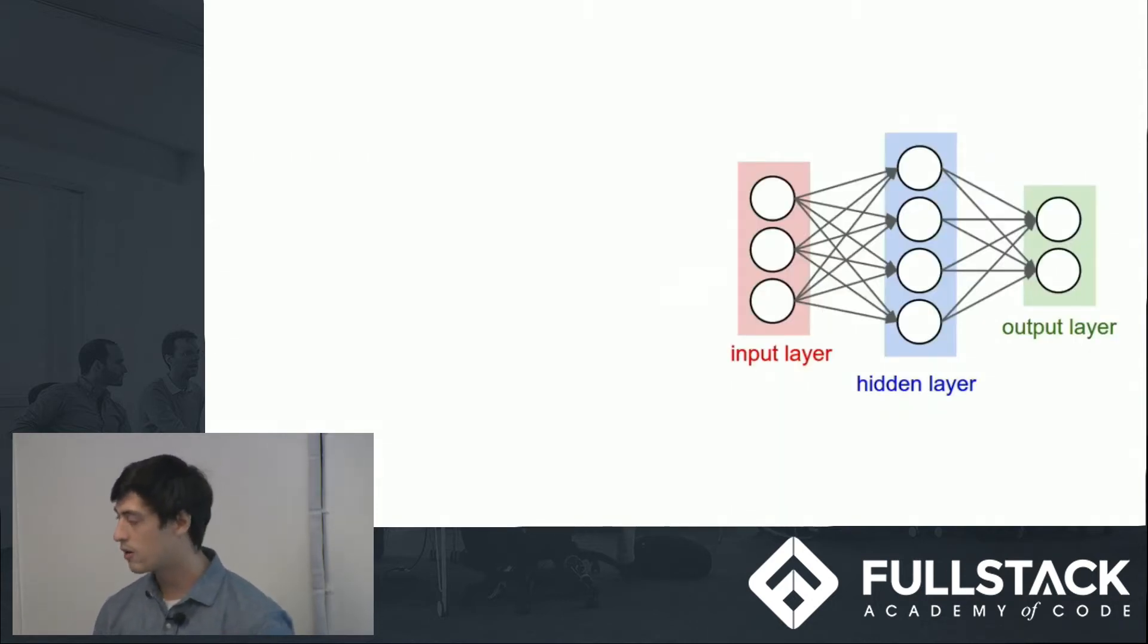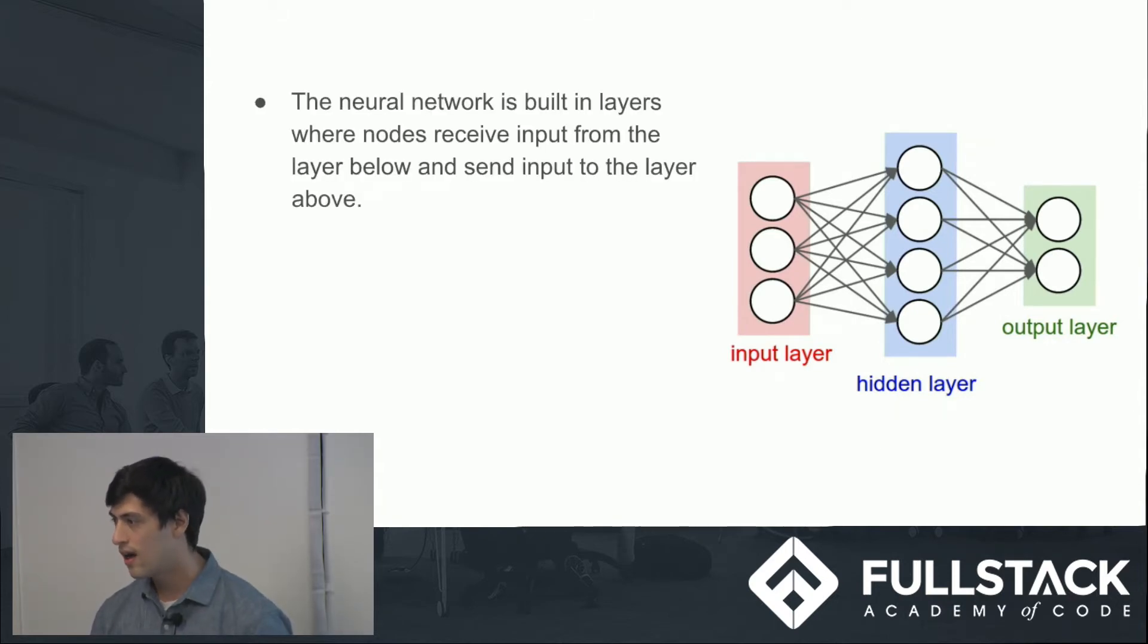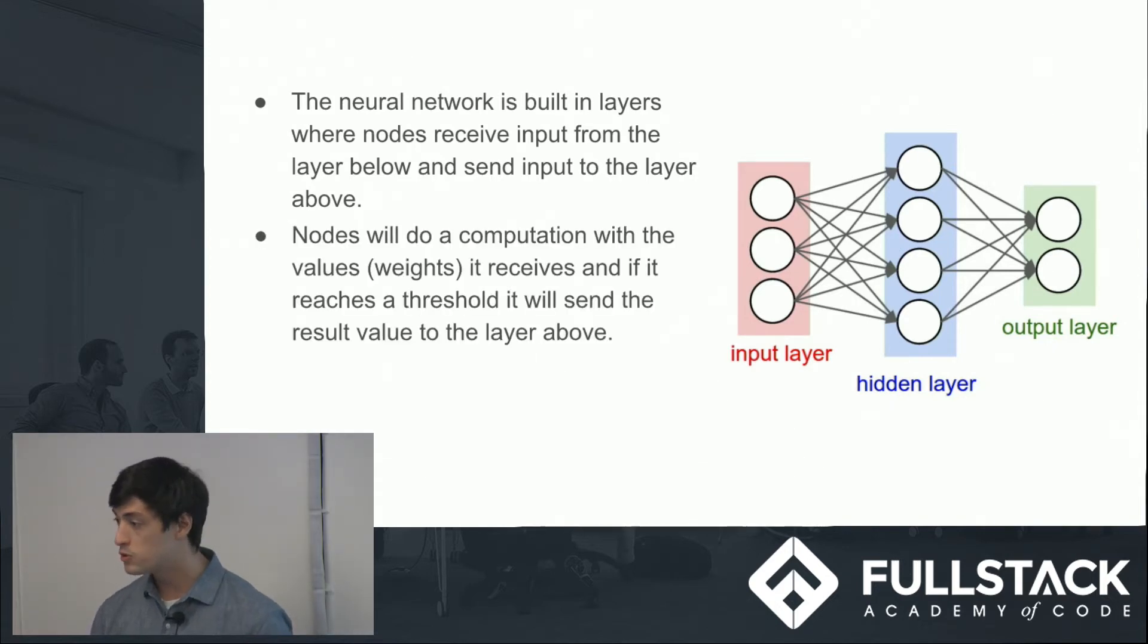So this is what a very simple neural network might look like, and we're going to go over how it's working. It's built in layers. We receive input in the input layer, and this data flows from the input layer towards the output layer, usually never in the opposite direction. Nodes will do a computation based on the data they receive and a weight that the nodes have. If that computation, which is just multiplying the values, they actually will multiply each value they receive with the weight they have, and if that reaches the threshold, they will then send that value out to the next layer in the neural network, similarly to how a neuron, if it reaches a certain amount of stimulation, will fire, but if it doesn't reach that level, will not fire.